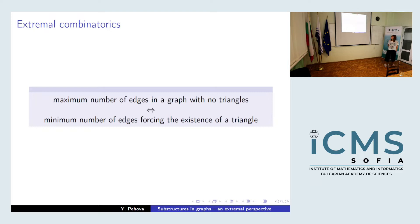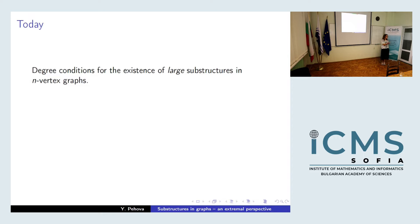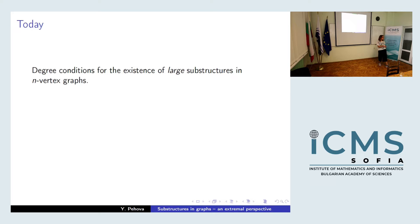Today I want to talk about degree conditions — specifically, minimum degree conditions — forcing the existence of large substructures in graphs on n vertices. In extremal graph theory, n always goes to infinity, so we always look at things for large n. None of the substructures we've seen so far — triangles, K₄ — were considered large compared to the size of the graph. For today's talk, there are two ways a substructure can be large.